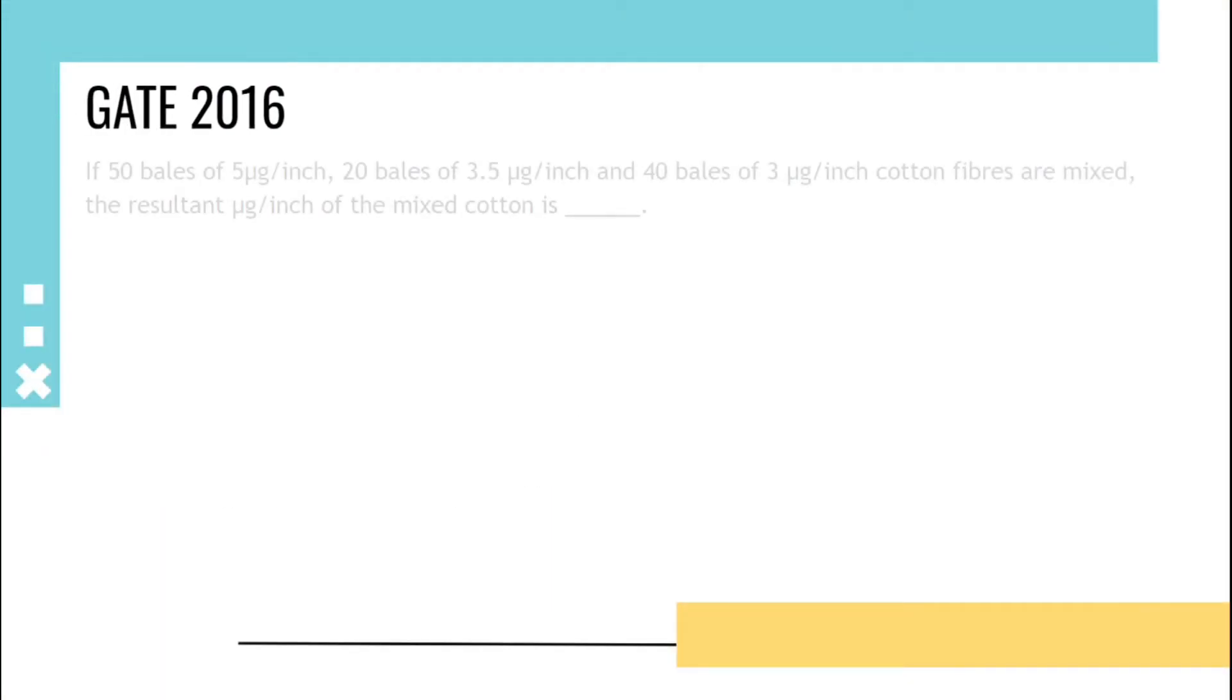If 50 bales of 5 micrograms per inch and 20 bales of 3.5 micrograms per inch and 40 bales of 3 micrograms per inch cotton fibers are mixed, the resultant micrograms per inch of the cotton is asked.